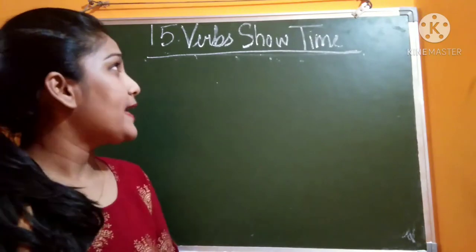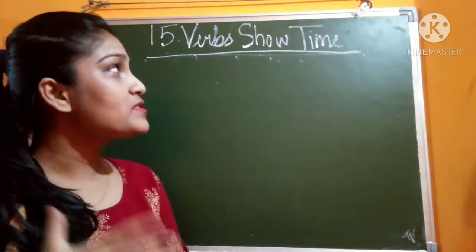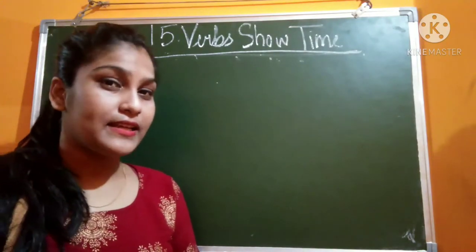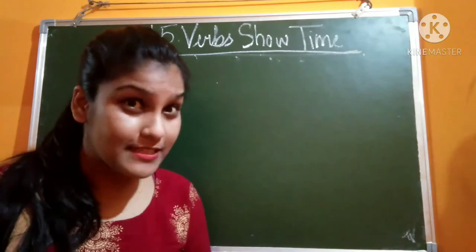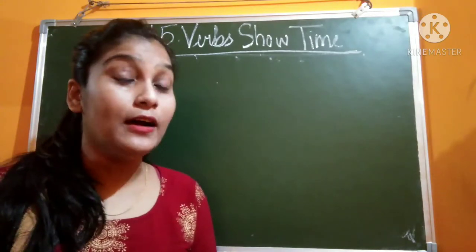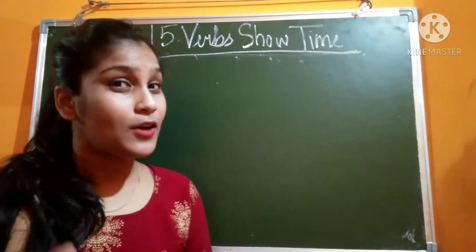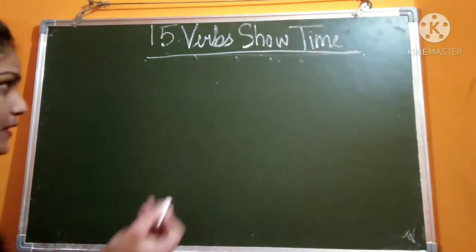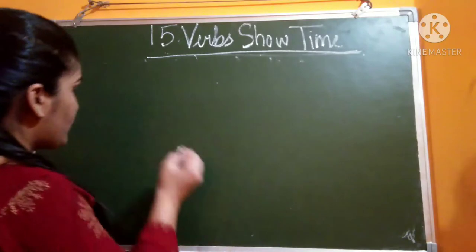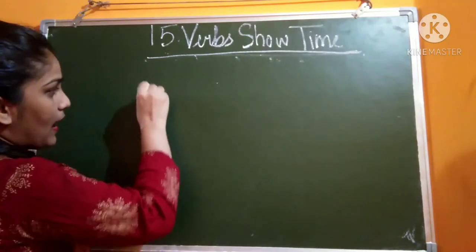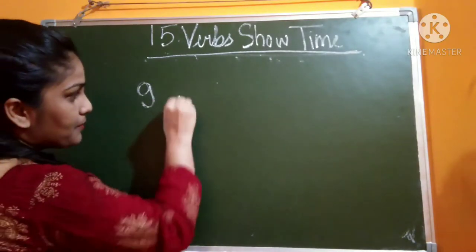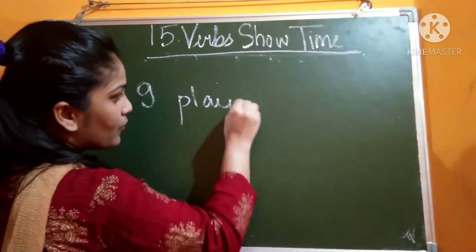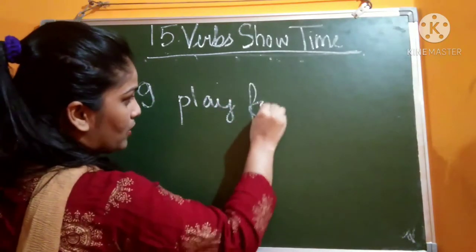There are different forms of verbs that show time. Time means it can be in the present or in the past. For example, I am going to show you: 'I play football'.